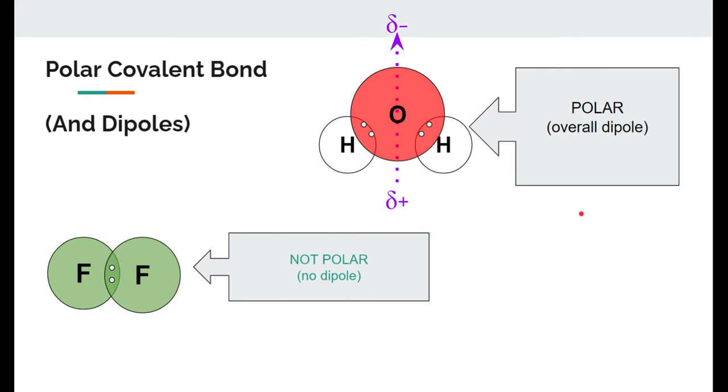This overall water molecule has a dipole, and we say that it is polar because we can see an overall dipole in the molecule with a partial negative end up here and a partial positive end down here. Now, if we stuck two fluorines next to each other, they would also share electrons, but they're tugging evenly. There's no dipole here at all.